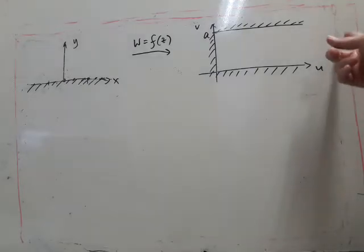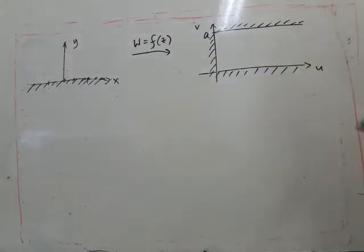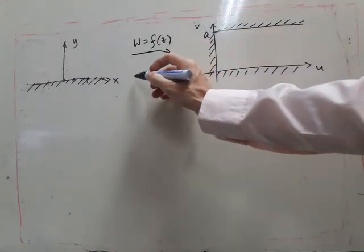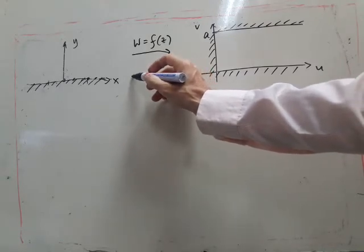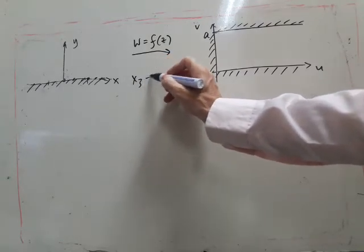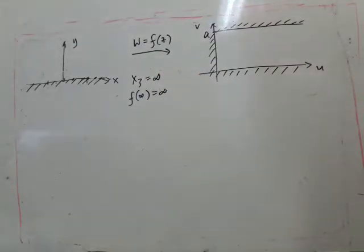It seems natural that we call this w3 is infinity and that corresponds to where x3 goes. So we can say for sure that x3 is infinity and f of infinity is the point of infinity.